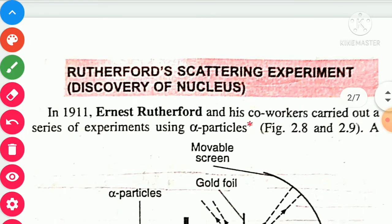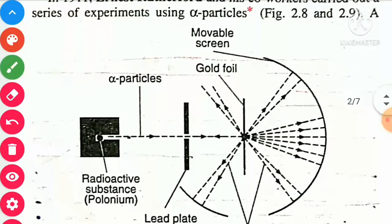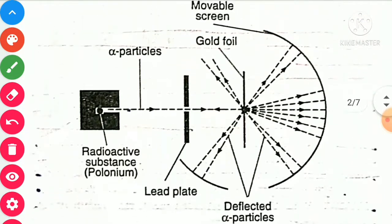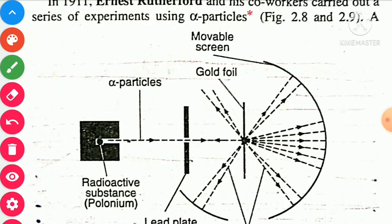Rutherford's alpha particle scattering experiment — the discovery of the nucleus. In 1911, Ernest Rutherford and his co-workers carried out a series of experiments using alpha particles. The alpha particles were produced from polonium (atomic mass 214). To discover the nucleus, Rutherford performed the alpha particle scattering experiment by bombarding alpha particles on a thin metal foil such as gold foil. For that, he took a fluorescent tube made of zinc sulphide.